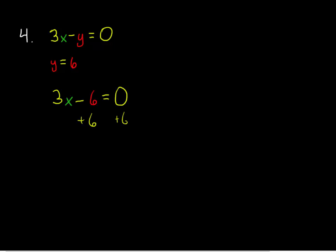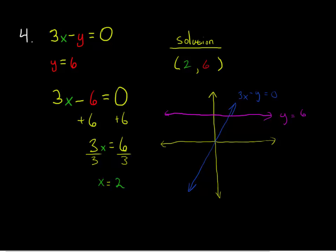Add 6 to both sides, then divide both sides by 3. So x is equal to 2. So my solution to this system of equations is the ordered pair (2, 6). And that solution, that ordered pair, represents the intersection of those two lines in the coordinate plane.